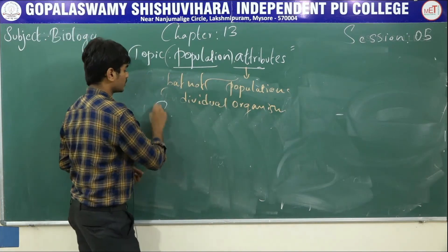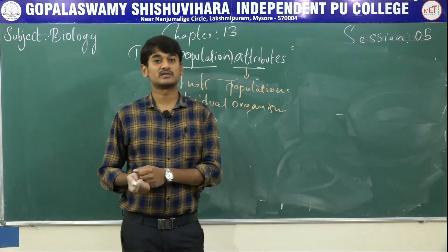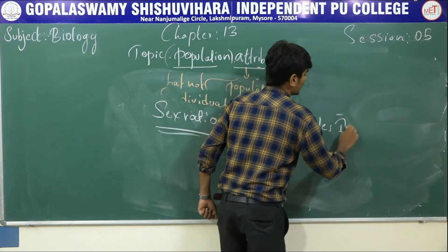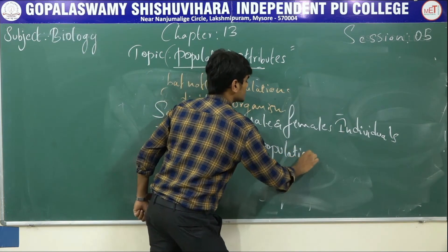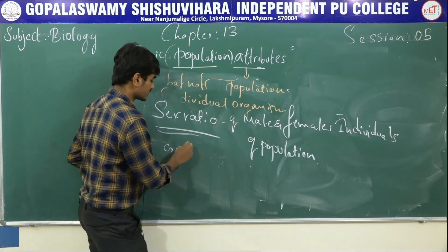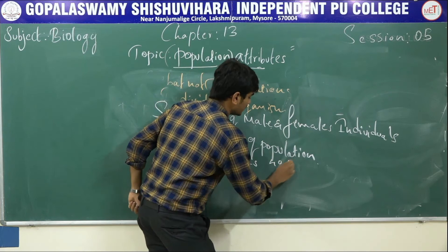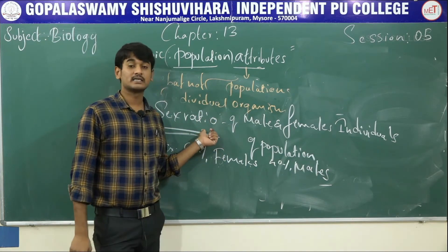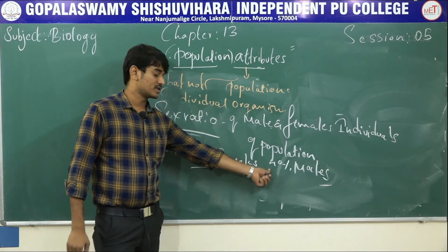The next attribute is sex ratio — the ratio of male and female individuals of a population. That is called sex ratio. For example, 60 percent of the population are females and the remaining 40 percent are males.